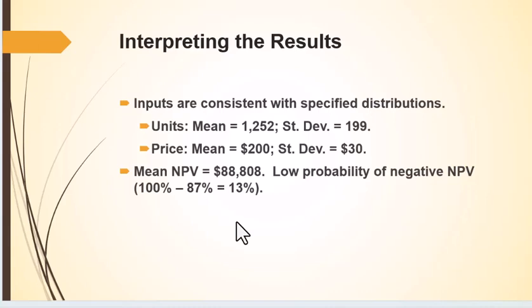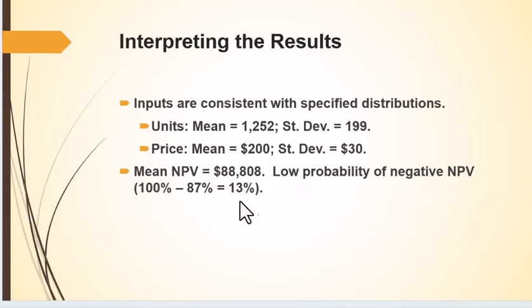The inputs are consistent with our distribution — the means are in the ballpark, and the mean net present value is pretty close. There's also a pretty low probability of a negative net present value. With changed values, they're saying there's only a 13% chance of a negative value. We could calculate what the probability of a positive net present value would be given those statistics.